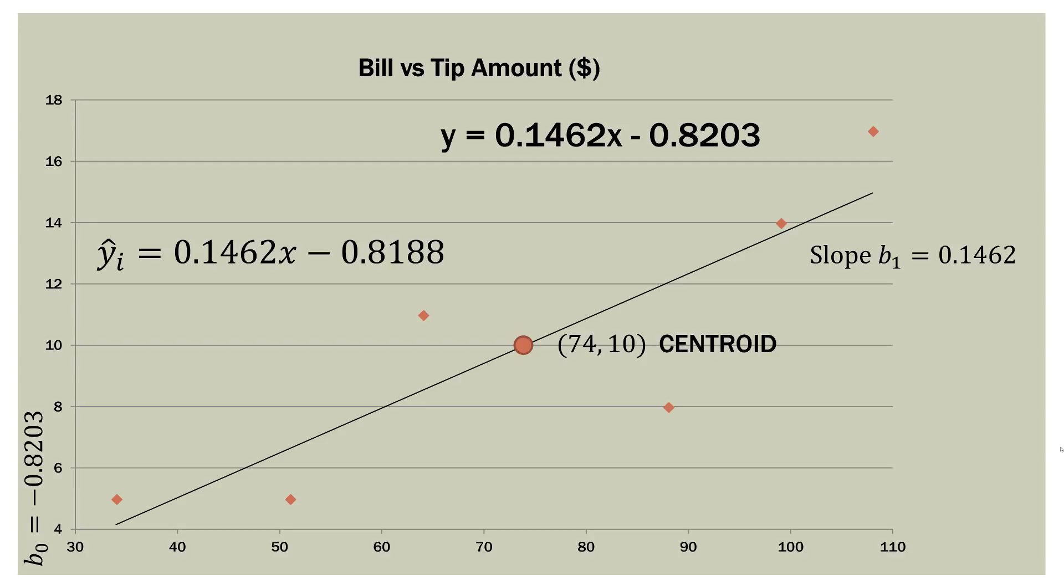We have a centroid here of 74 and 10. And again, that point just represents the mean of each variable. So our mean tip amount was $10 here on the y-axis, and our mean bill amount was $74 here on the x-axis. So this is the model we are working with.